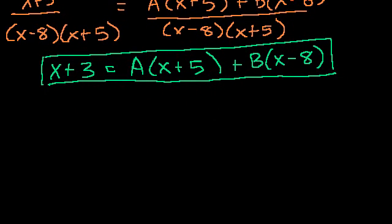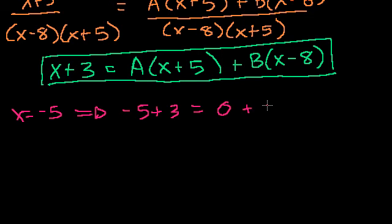As a review, in the last video, to solve this I just set x to be values that would make the a or the b disappear. If x equals minus 5, I picked minus 5 because it makes this expression 0, so it cancels out the a. You're left with minus 5 plus 3 equals 0 plus b times minus 5 minus 8. If you solve for this, you get b equals 2 over 13.